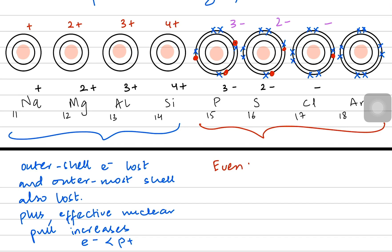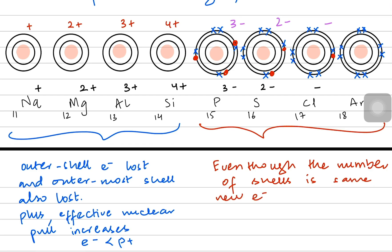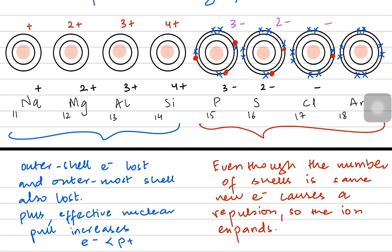When we talk about non-metals, they gain electrons — not in new shells, so the number of shells remains the same. The new electron comes into the same shell. However, the ionic radius is higher because the new electron causes repulsion with the previous electrons, so the ion expands. Negative ions are always bigger than the atoms, while positive ions are always smaller than the atoms.